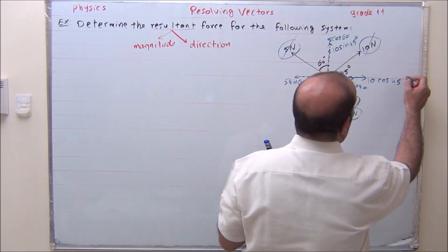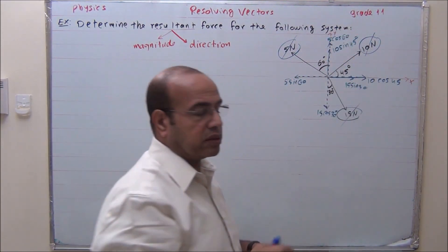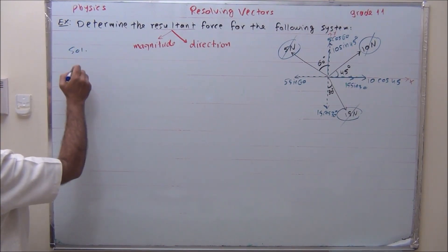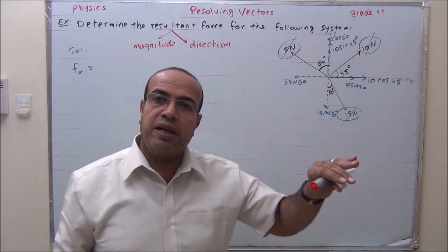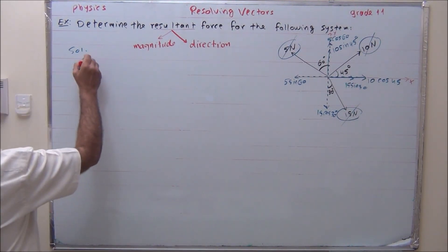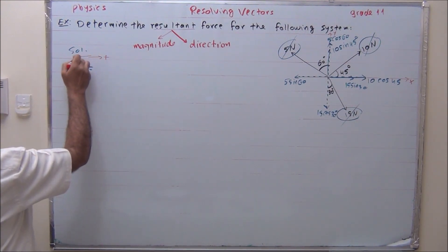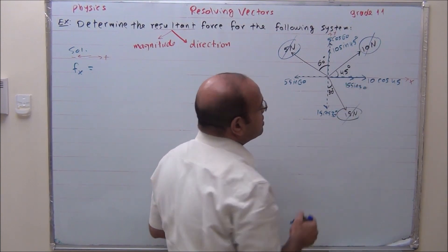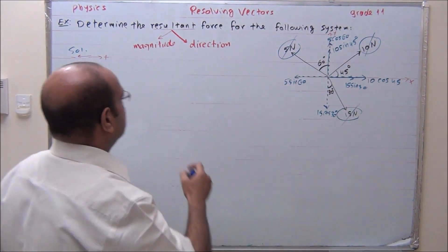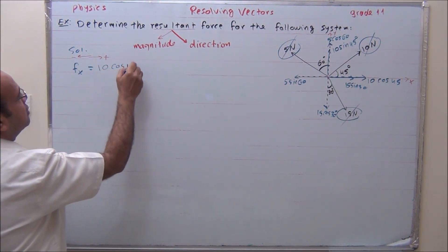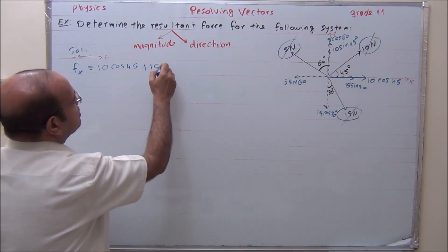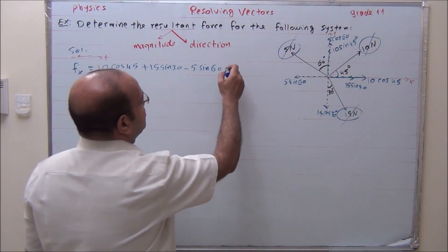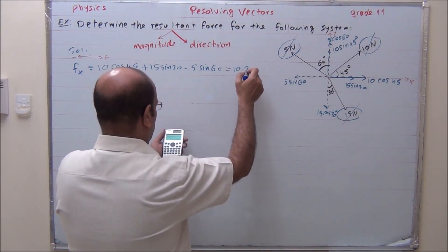This direction is the x-axis and this direction is the y-axis. We find the sum of forces in the x-axis, Fx. Right will be positive, left will be negative. So we have 10 cosine 45 plus 15 sine 30 minus 5 sine 60. The answer is 10.2 Newton.